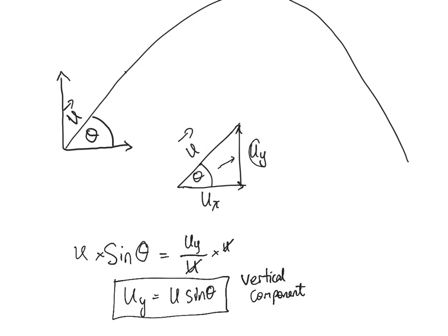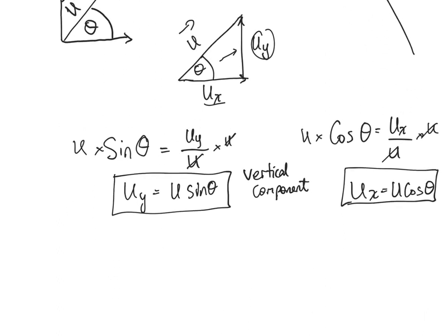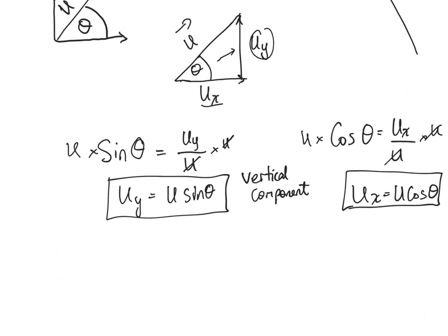The next one: if we use cos theta, we get adjacent divided by hypotenuse, times both sides by u just to cancel that out. You end up with ux equals u cos theta. And these can then be used in the formulas that you have on the test.